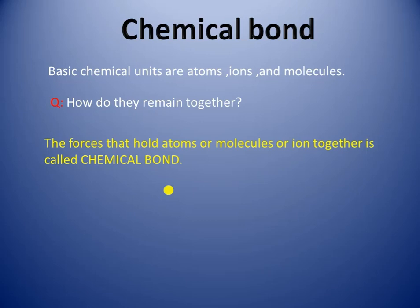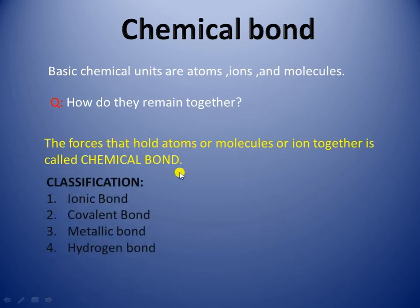The answer is the attractive force amongst themselves hold these units together. So the forces that hold atoms, molecules, or ions together is called chemical bond. Chemical bonds can be classified into four categories: ionic bond, covalent bond, metallic bond, and hydrogen bond.